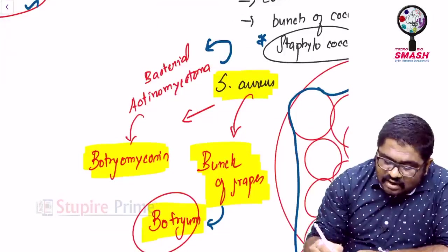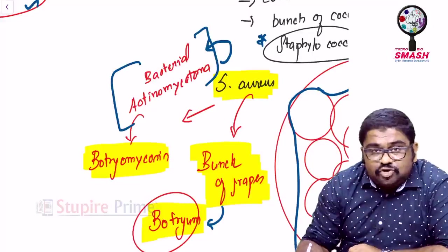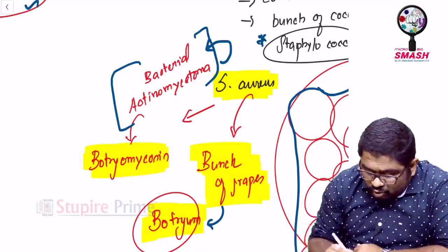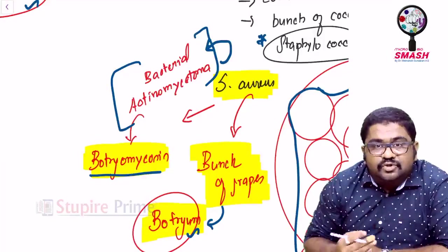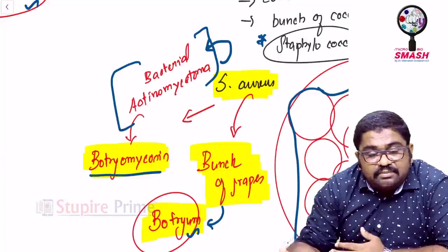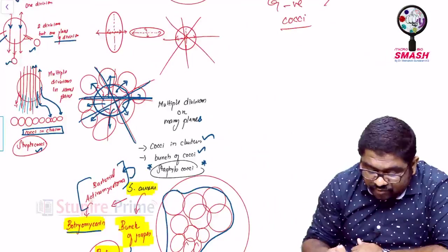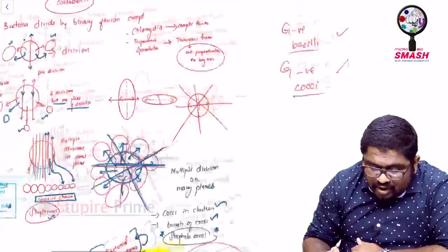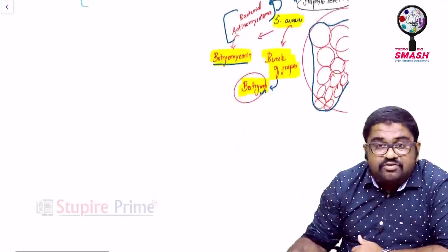Staphylococcus aureus is one of the examples of an organism causing bacterial actinomycetoma. So here, when Staphylococcus aureus causes bacterial actinomycetoma, you don't just stop by saying actinomycetoma, you go one step ahead, use the concept of botryoid and call it as botryomycosis. So this is to tell you the shape of an organism and the way by which it divides can make a lot of difference in the way you look at the organism and the way the organism behaves in front of you.